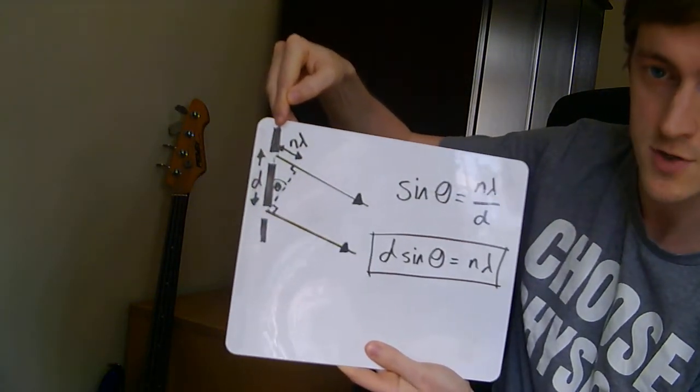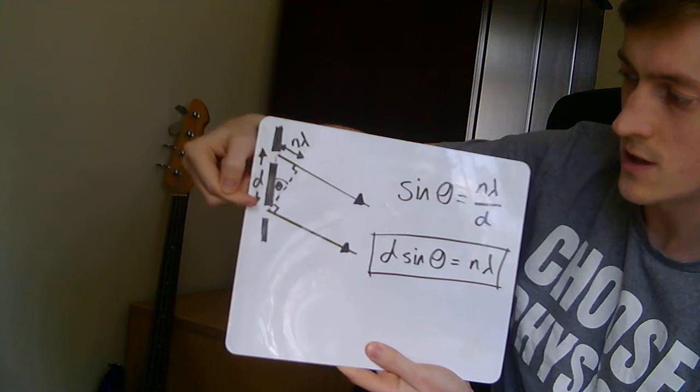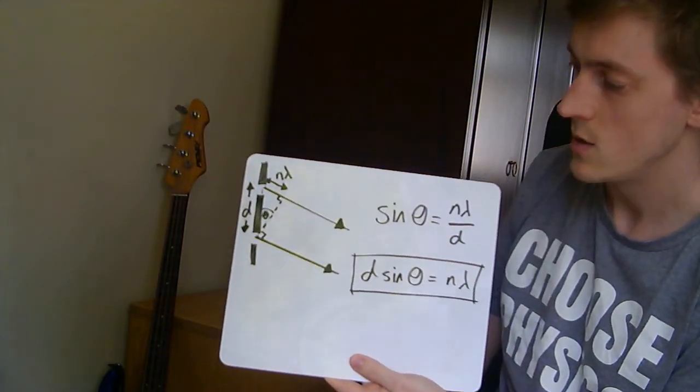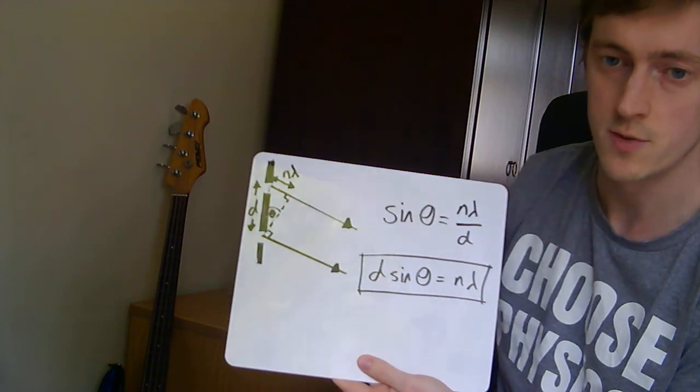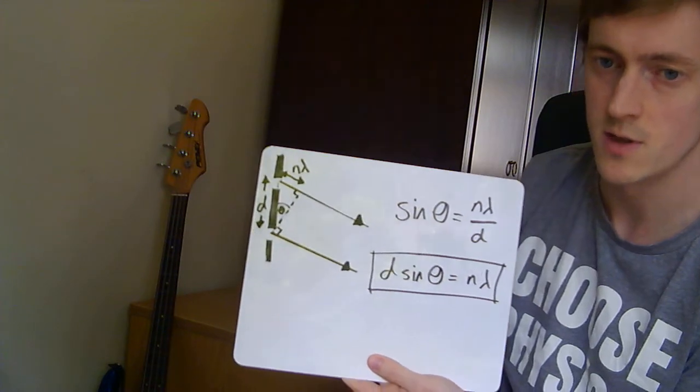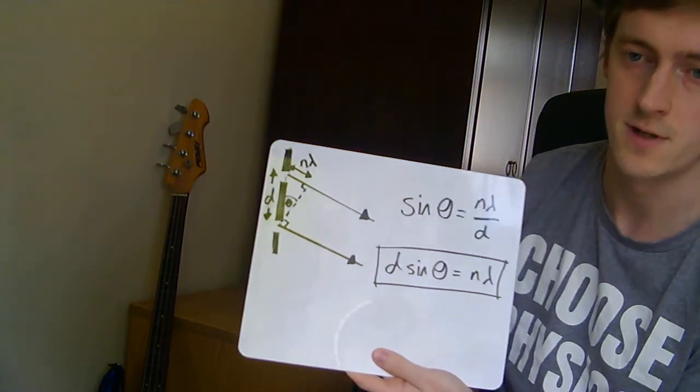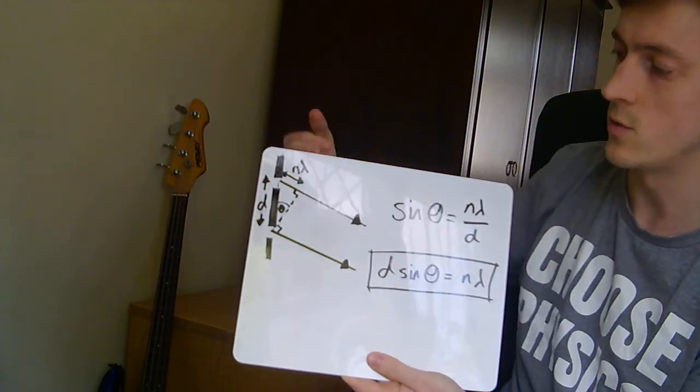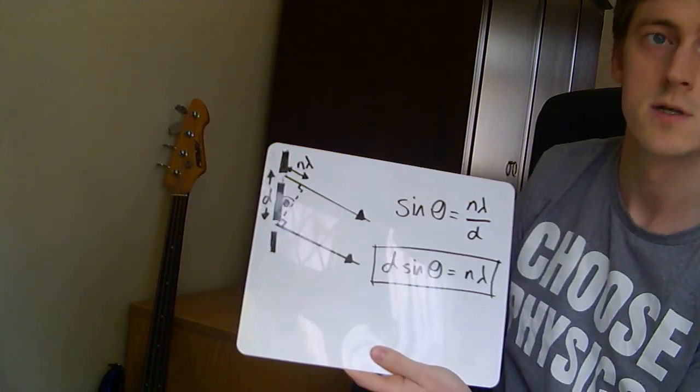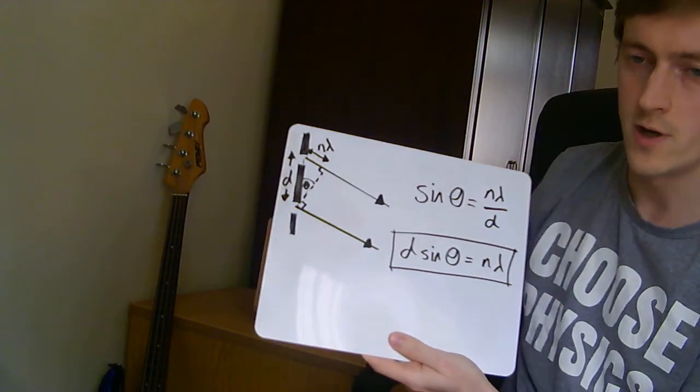This here is a diffraction grating. You can see we've got two gaps there. The diffraction grating itself will have a huge number of slits or gaps. We're only really interested in two of them. The question becomes, what condition is necessary for us to have an order? In other words, for these rays to combine constructively so that we've got a proper ray of light coming through.